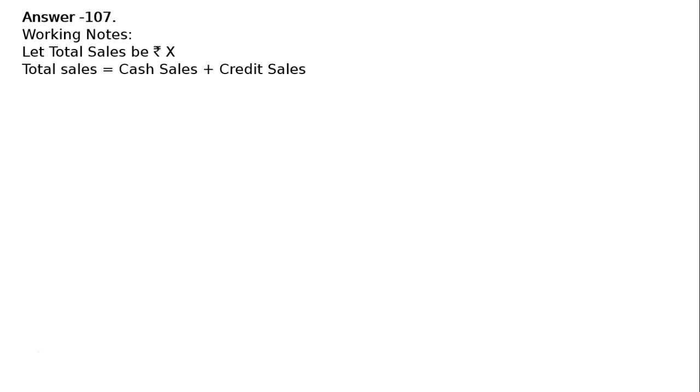Question 107: Calculate gross profit ratio from the following data. Cash sales are 20 percent of total sales, credit sales are rupees 5 lakhs, purchases are rupees 4 lakhs, and excess of closing inventory over opening inventory is rupees 25,000. Working notes: let total sales be rupees x.